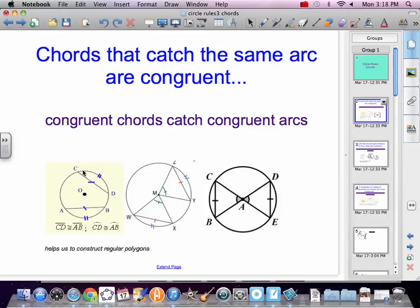So if you look here, we see that arc CD and arc AB are the same. That means segment CD, chord CD, and chord AB are the same. Same here.